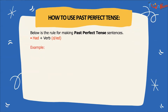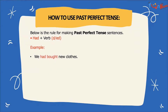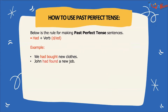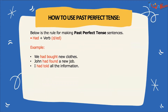Let's look at some more examples to make this clear. We had bought new clothes. John had found a new job. I had told all the information. He had beaten chess easily.